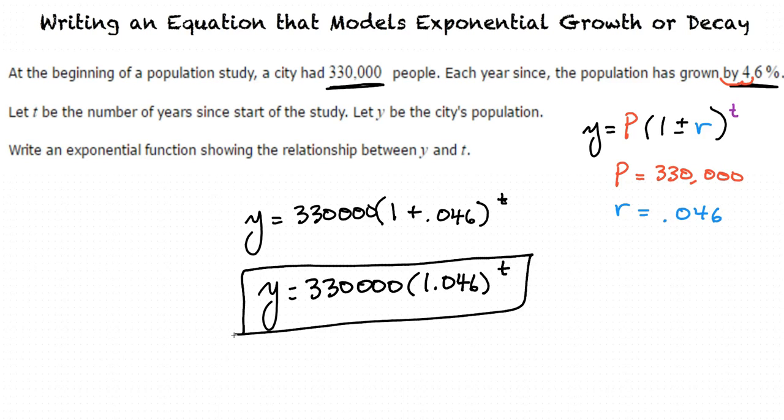That makes sense. If I know the formula Y equals P times the quantity of 1 plus or minus R to the power of T, and I have a principal amount and a rate of change, I can write an equation that models any exponential growth or decay situation, right?